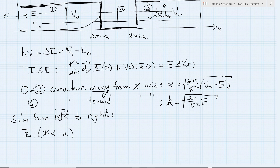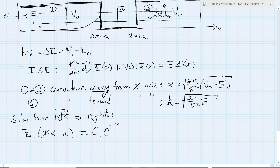Going with that, I write phi sub 1 in exponential form. I have a constant c1 times e to the minus alpha x — that's the decaying exponential — and then d1 times the growing exponential, e to the plus alpha x.